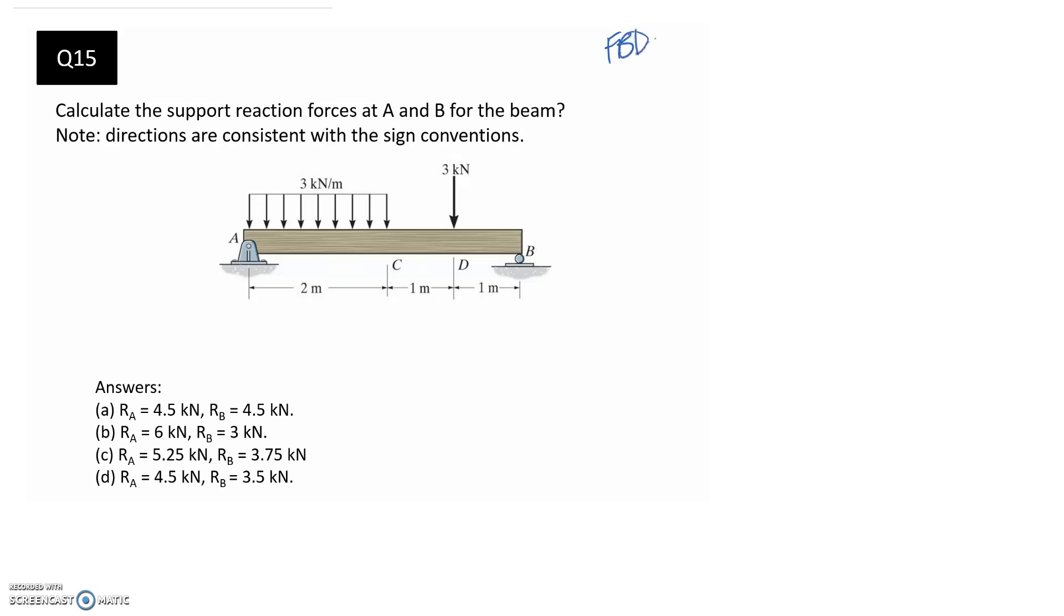So free body diagram. Taking across all the external forces, we've got this uniformly distributed load of 3 kilonewtons per metre, and then we also have our point load of just 3 kilonewtons. We've got a support reaction at A, and we can see that it's a pin, so a pin has a horizontal and a vertical force, so I'll call this AY and AX. And then at B, we have a roller. A roller only has the one support force, and it's perpendicular to the surface, so it's a horizontal surface. That means that the support force is going to be vertical, and I'll call it BY.